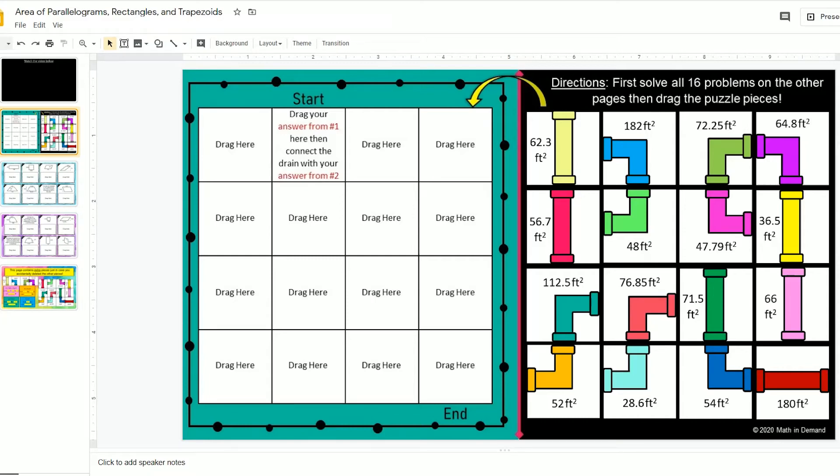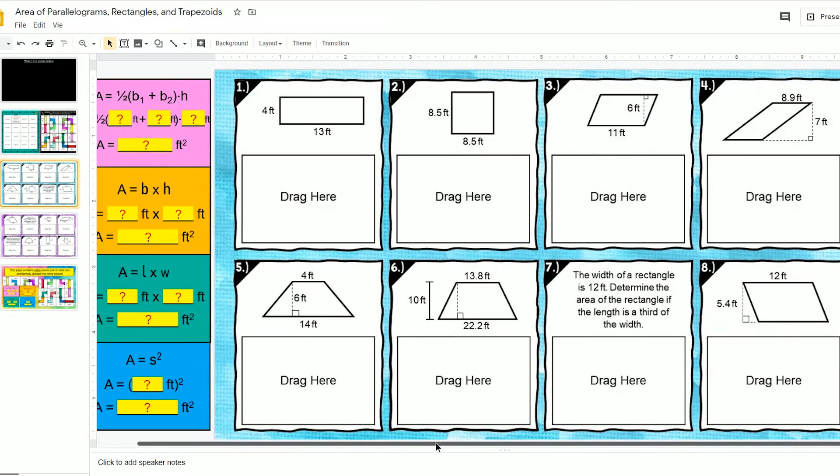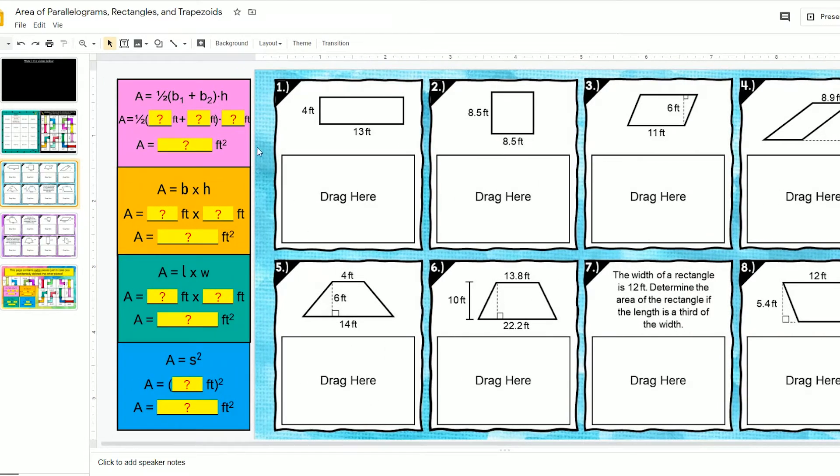I'm going to show you how to complete this activity. You will go to page 3 and solve problem number 1. I'm going to scroll to the left because I have four different formulas for area, and I need to determine what this figure is.